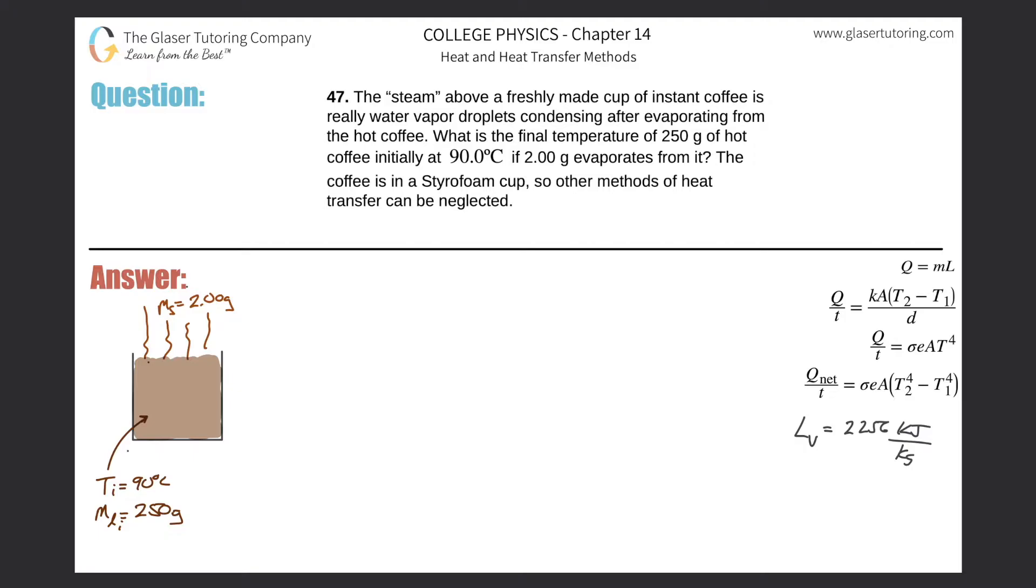Number 47: The steam above a freshly made cup of instant coffee is really water vapor droplets condensing after evaporating from the hot coffee. What is the final temperature of 250 grams of hot coffee initially at 90 degrees Celsius if two grams evaporates from it? Assume it's a Styrofoam cup.